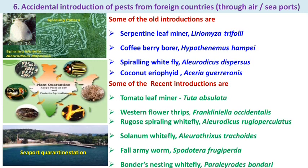The sixth cause is the accidental introduction of pests from foreign countries through airports and seaports — these are called exotic pests. Some older introductions include serpentine leafminer, coffee berry borer, spiraling whitefly, and coconut eriophyid mites, which entered the country through different ports.